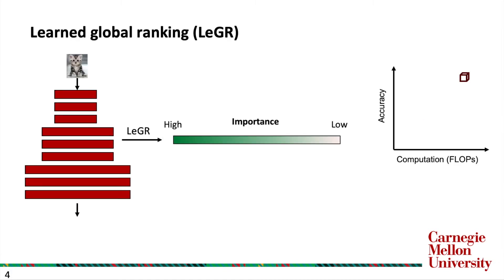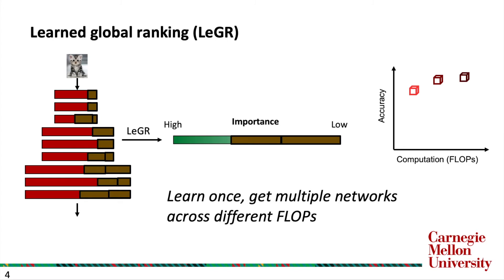To achieve this goal, we propose Learned Global Ranking, or Ledger. The key idea is to rank filters across different layers using a global importance metric, such that filter pruning at different target sparsity can be done efficiently by thresholding the bottom-ranked filters. The benefit of such a formulation is that one can obtain multiple pruned networks by learning the ranking once.